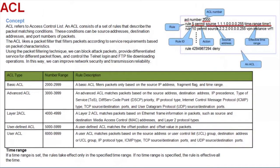Today, I will introduce ACL to you. ACL refers to Access Control List, and ACL consists of a set of rules that describe the packet matching conditions. These conditions can be source addresses, destination addresses, and port numbers from packets. The ACL is like a packet filter that filters packets according to service requirements based on packet characteristics.